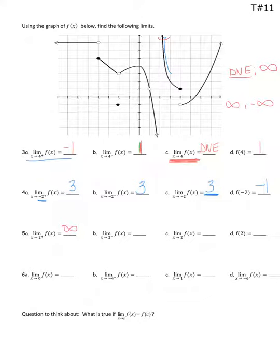As I approach 2 from the left, where is it going? That's negative infinity. Now the overall limit: does the limit from the right equal the limit from the left? I got positive infinity for one and negative infinity for the other — those are two different things, so I put 'does not exist.' Is there a closed dot at 2? No, so f(2) does not exist as well.